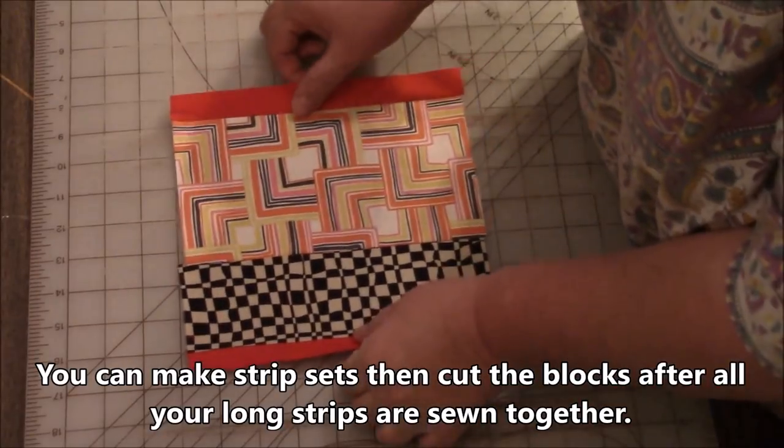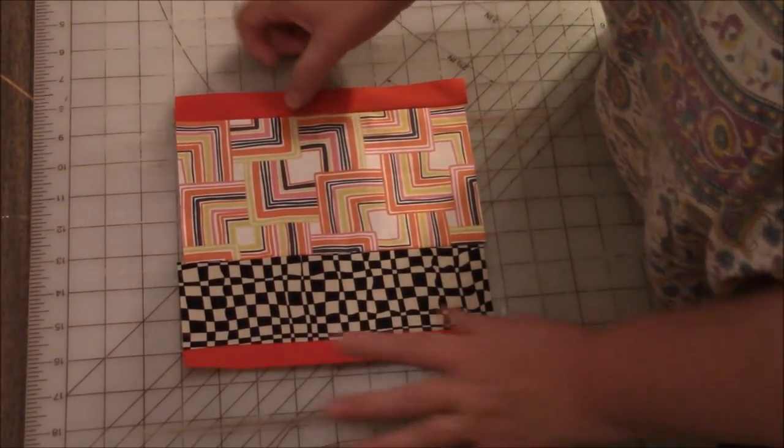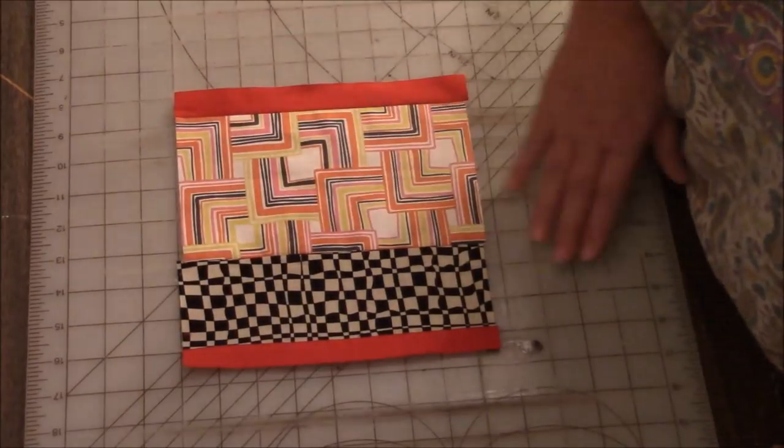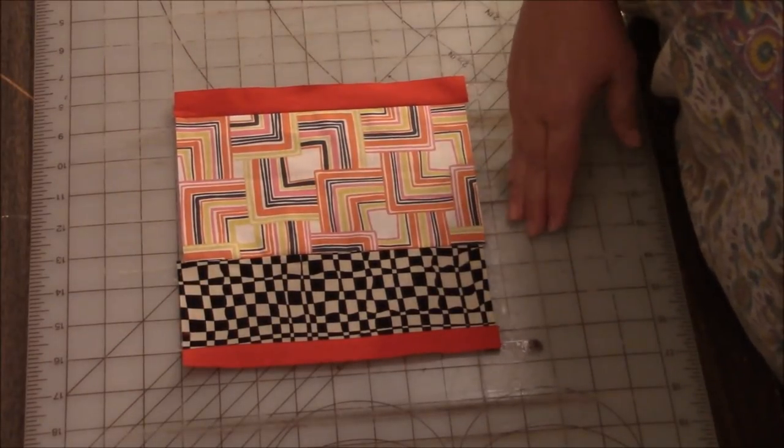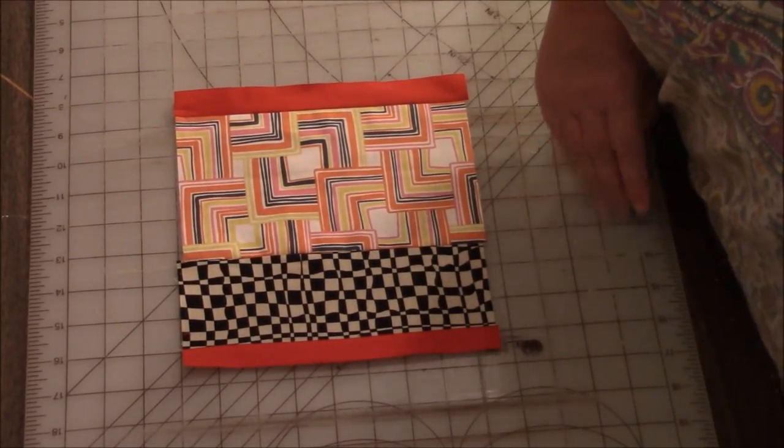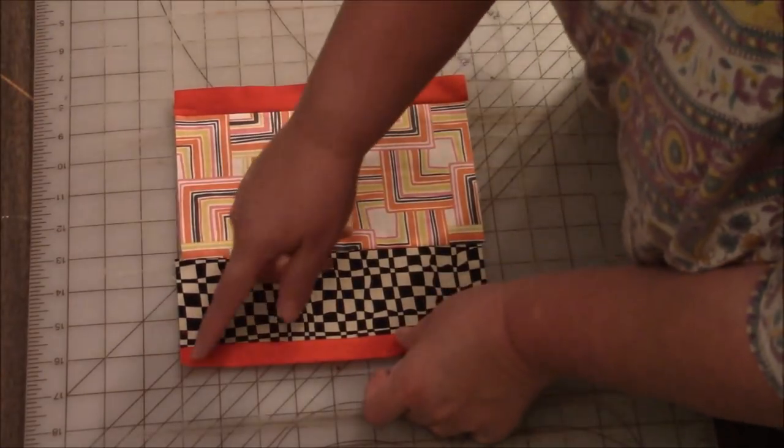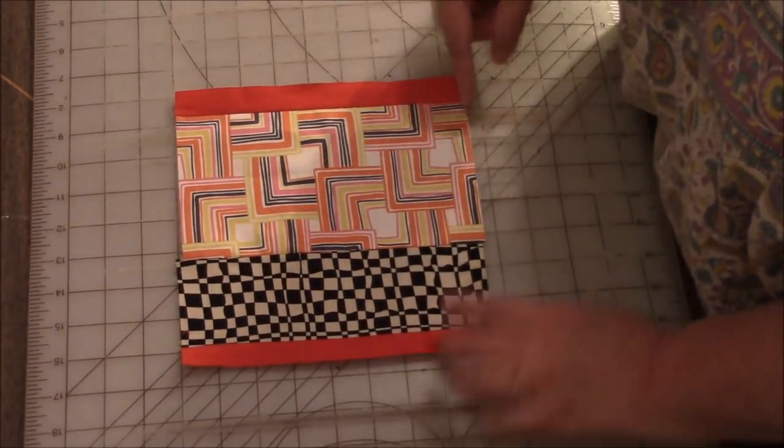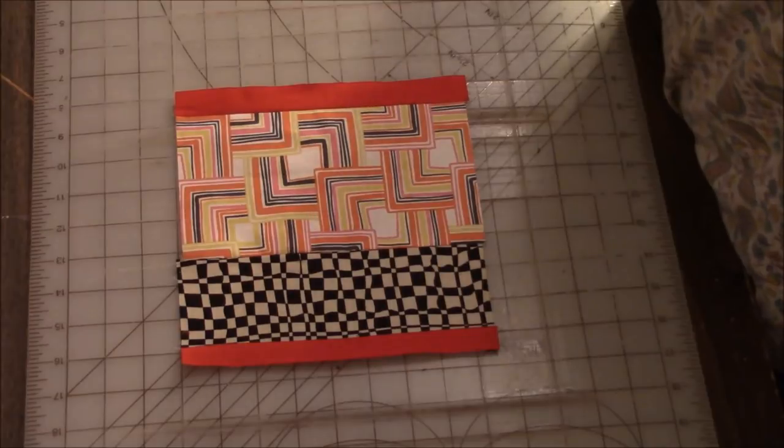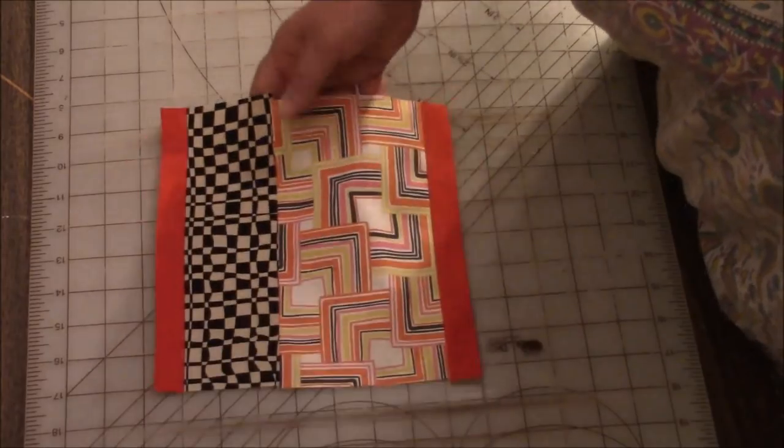I do indeed have this eight and a half wide and it's a little bit more than eight and a half tall because I allowed some wiggle room. I probably did more like eight and three quarters so I can just trim these ends and that's going to be a perfect eight and a half inch block. And I really like it.